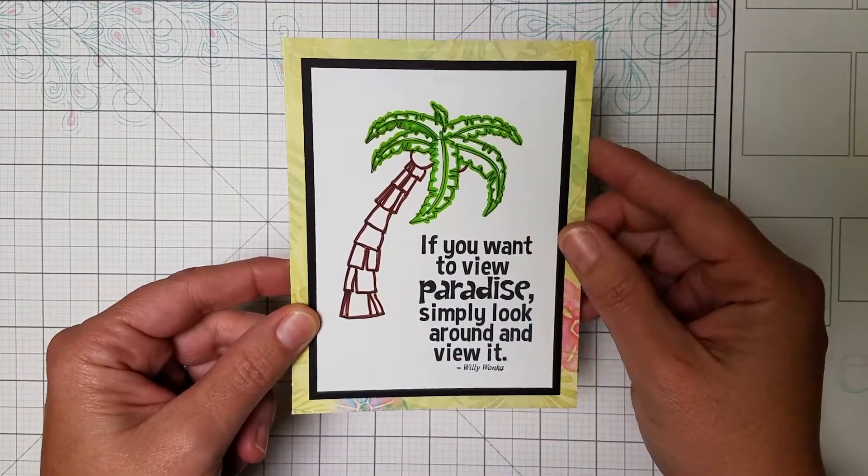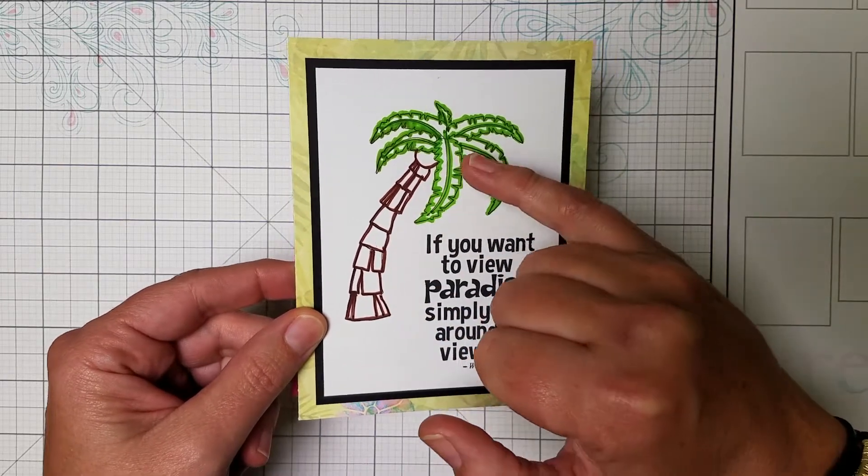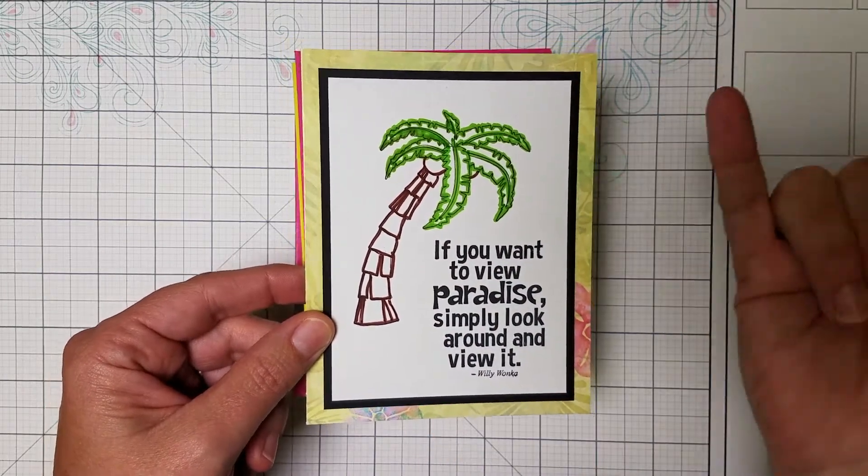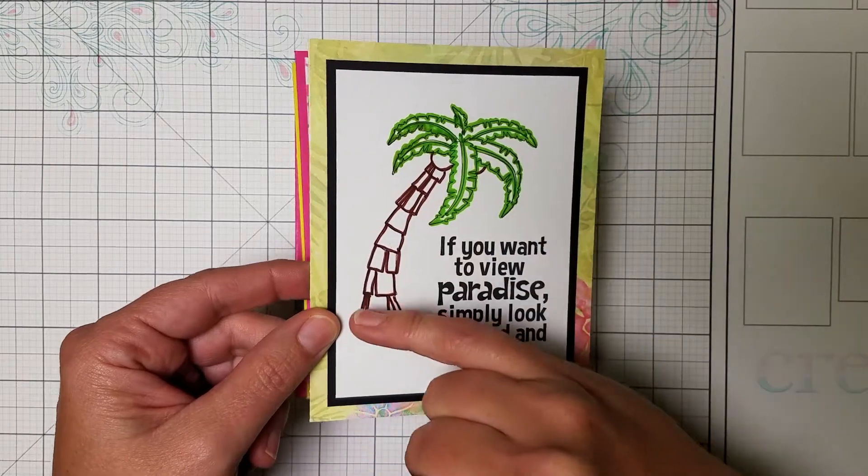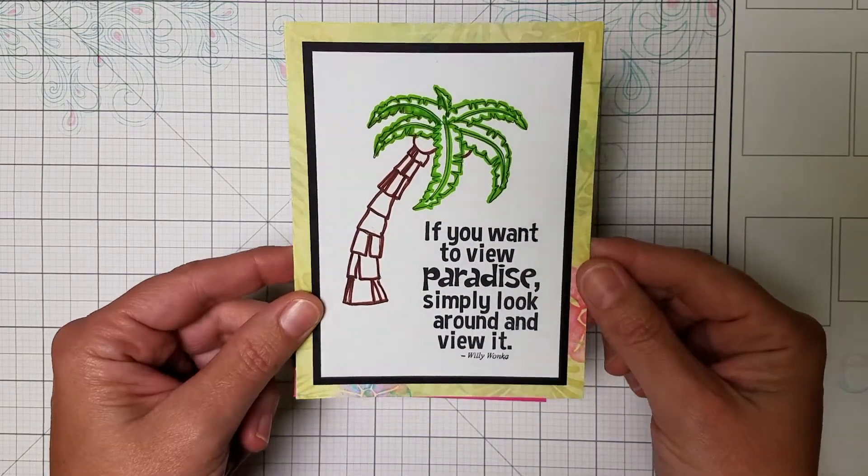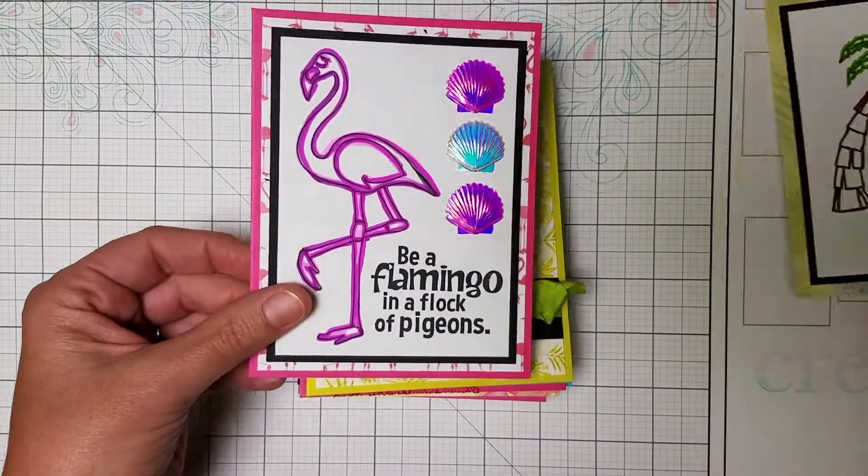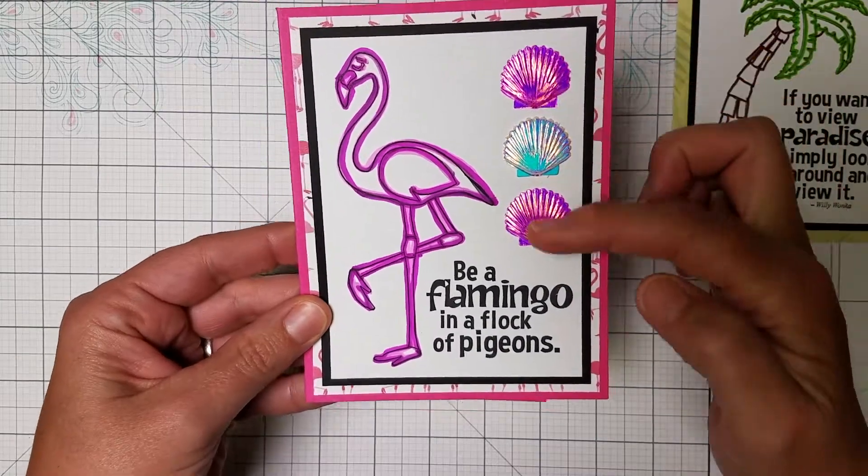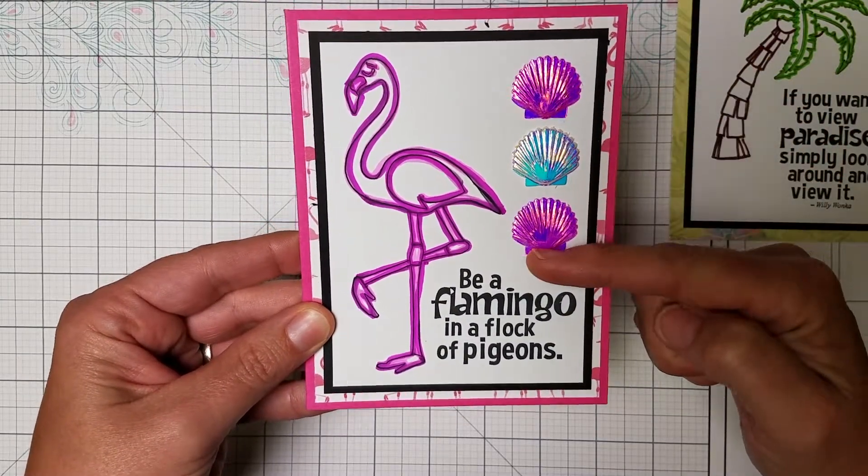One of the things about the stamps in this particular set is that they're outlined, and I had a lot of fun just taking a marker, actually used a Sharpie, and colored in the solid lines from the image here to finish this pretty basic card. And then one of the goodies in the collection include these shell sequins.